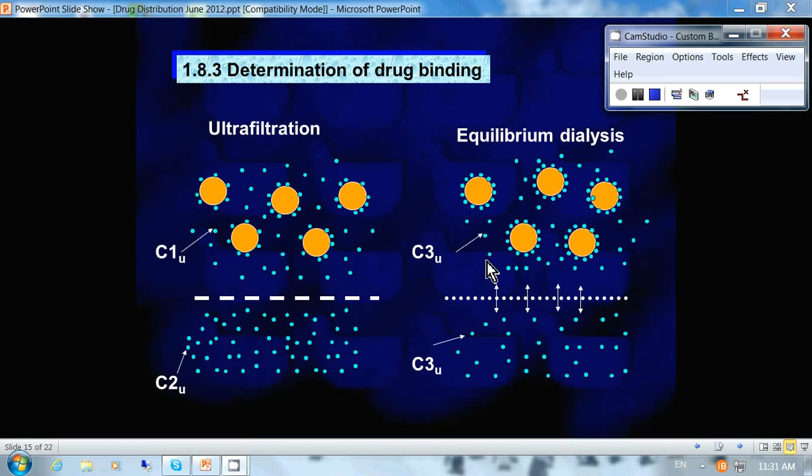So the unbound drug then moves through the membrane to the donor compartment to try and equalize the osmotic pressure. And then we can see that really it's unbound drug that moves through. If we measure the concentration here, it should give us a good estimate of the amount of unbound concentration. So C3 here is approximately equal to C3 there, the concentrations.